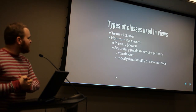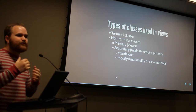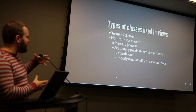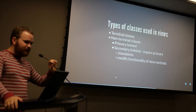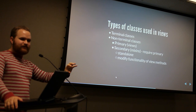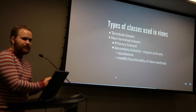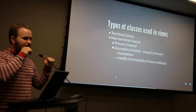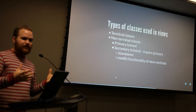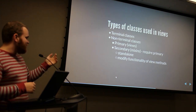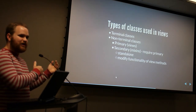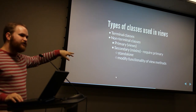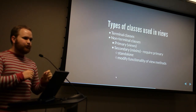This is the views-versus-mixins thing. You've got terminal classes — these are the end views, the final use case, not expected to be extended further. Then you have non-terminal classes: primary ones are the views Django provides, and secondary ones are the mixins. Mixins require primary views in order to operate and basically just provide a set of functionality. Some mixins will actually modify the functionality of view methods — for example, there's a third-party library called Django Braces with a CsrfExemptMixin: add that as a mixin and it'll flag that view as CSRF-protected.